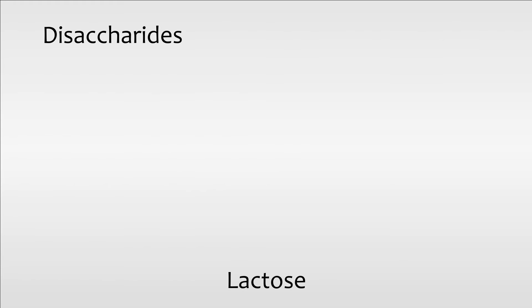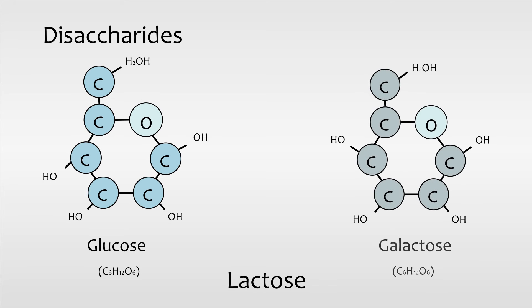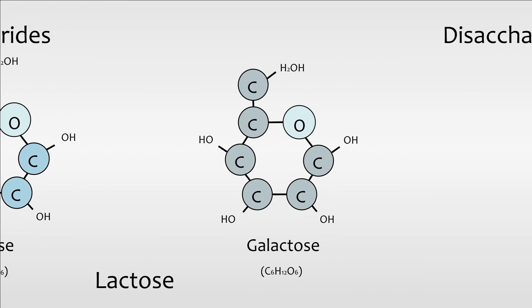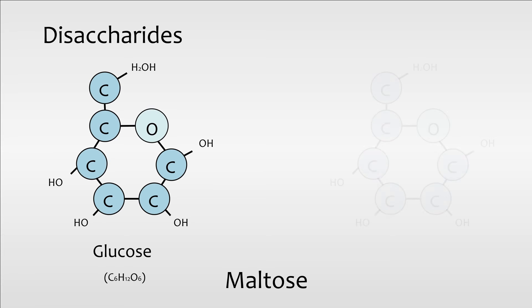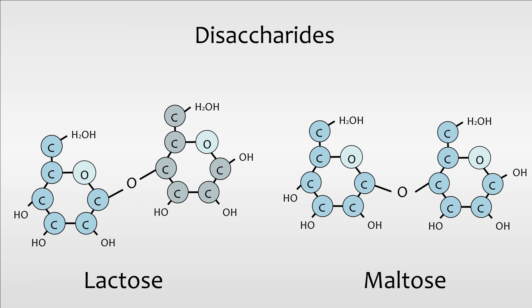Lactose, which is the combination of glucose and galactose, is also known as milk sugar. Maltose is the combination of 2 glucose molecules bound together and is also known as malt sugar. Both of these molecules are important daily nutrients which can be broken down to monosaccharides to be used as energy.